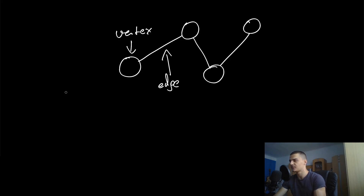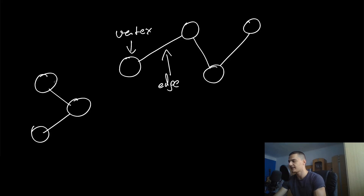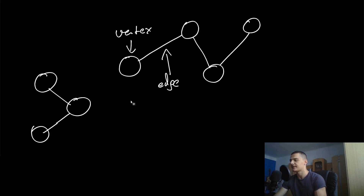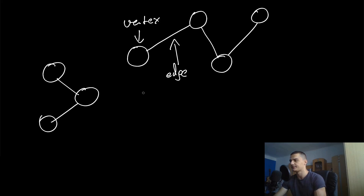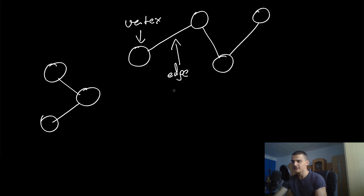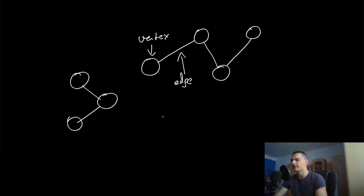You can also have a graph consisting of subgraphs that are not connected. For example, here we have one graph and here is another, but if you say this whole thing is one graph, it's still one graph that is just not interconnected. Graphs can have many different properties.